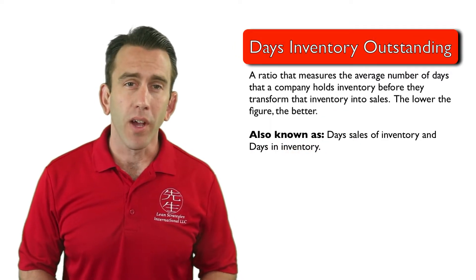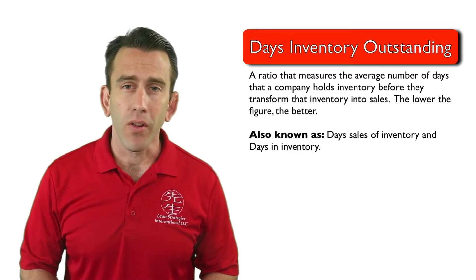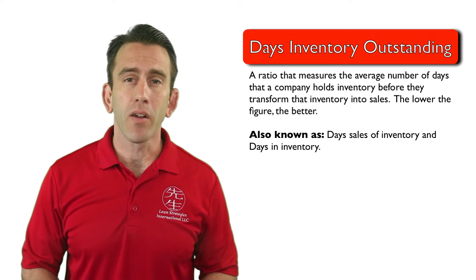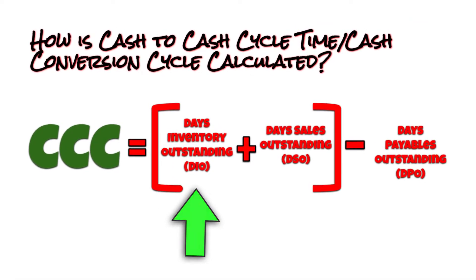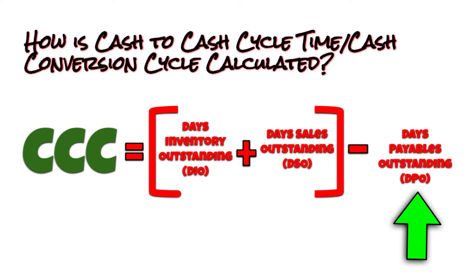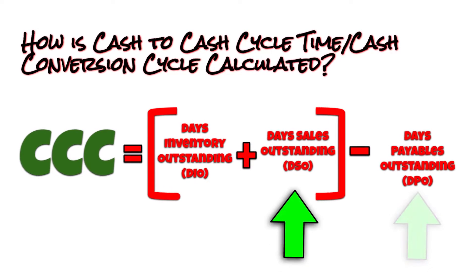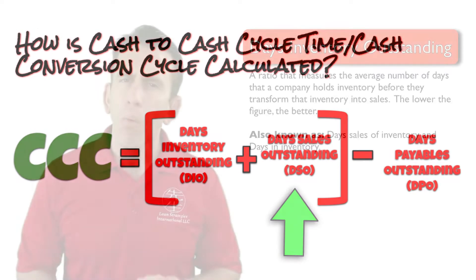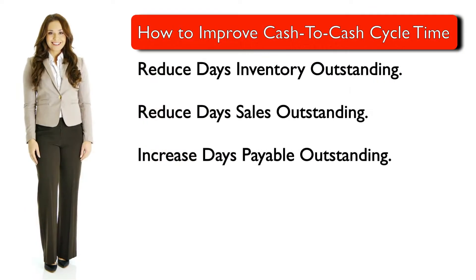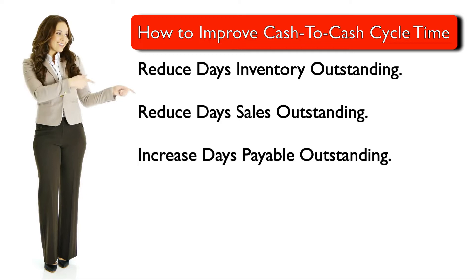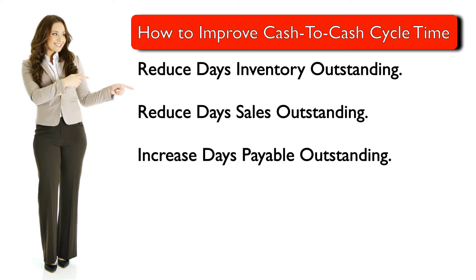The cash conversion cycle is calculated using three metrics: Days Inventory Outstanding, Days Payable Outstanding, and Days Sales Outstanding. This tells us that the cash-to-cash cycle time can be improved by reducing D.I.O., reducing D.S.O., or increasing D.P.O.